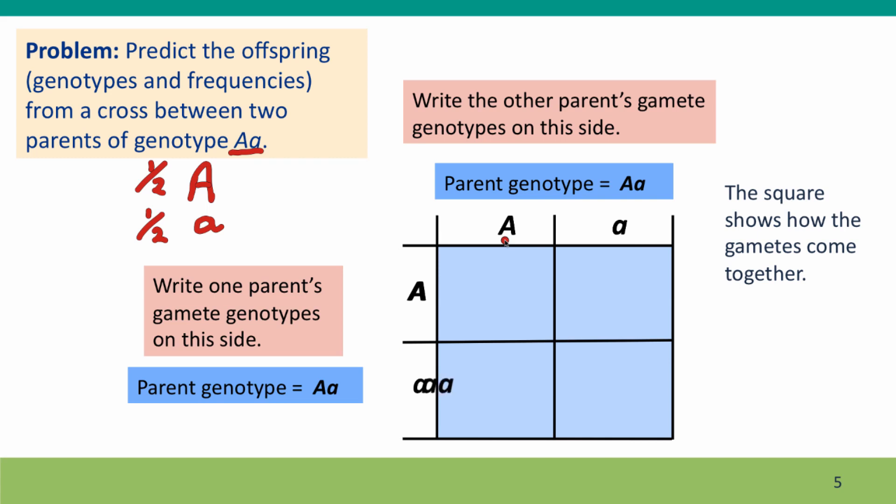Then the gametes can come together and we see the genotypes of the offspring represented simply by filling in the squares with the gamete genotypes. So we have big A big A genotypes, little a little a genotypes, and two squares of heterozygous genotypes.